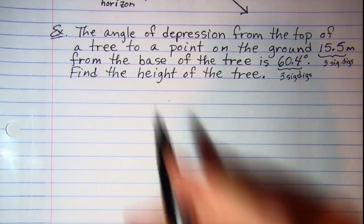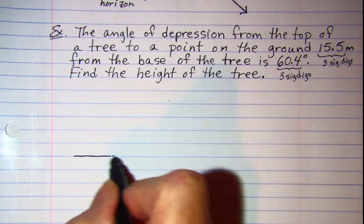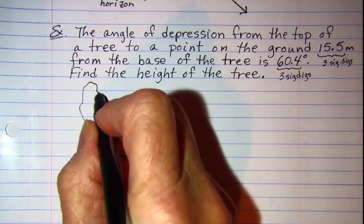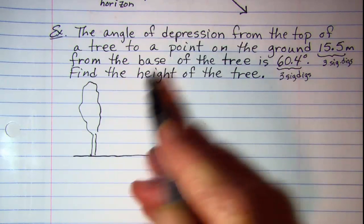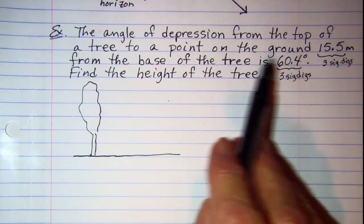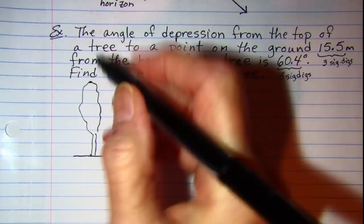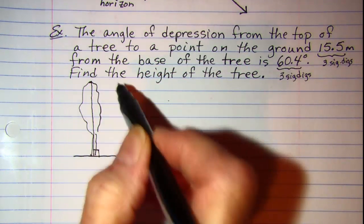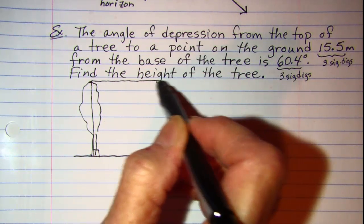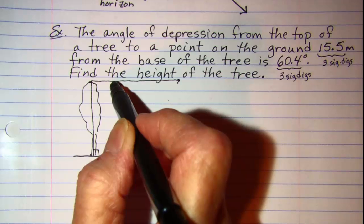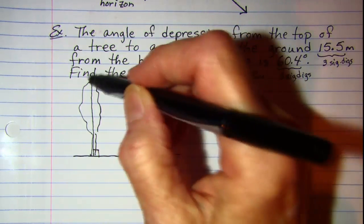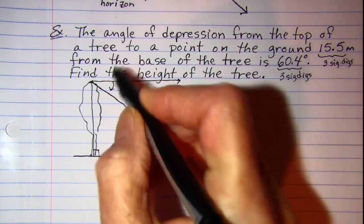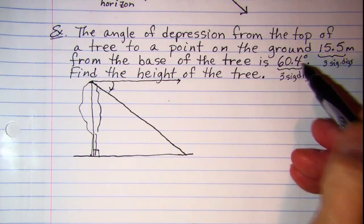So we have a tree, here's our ground and our tree. And the angle of depression from the top of the tree to a point on the ground. So from the top of the tree, angle of depression we first need our horizon and then we need to go down. And the angle of depression right here is 60.4 degrees.